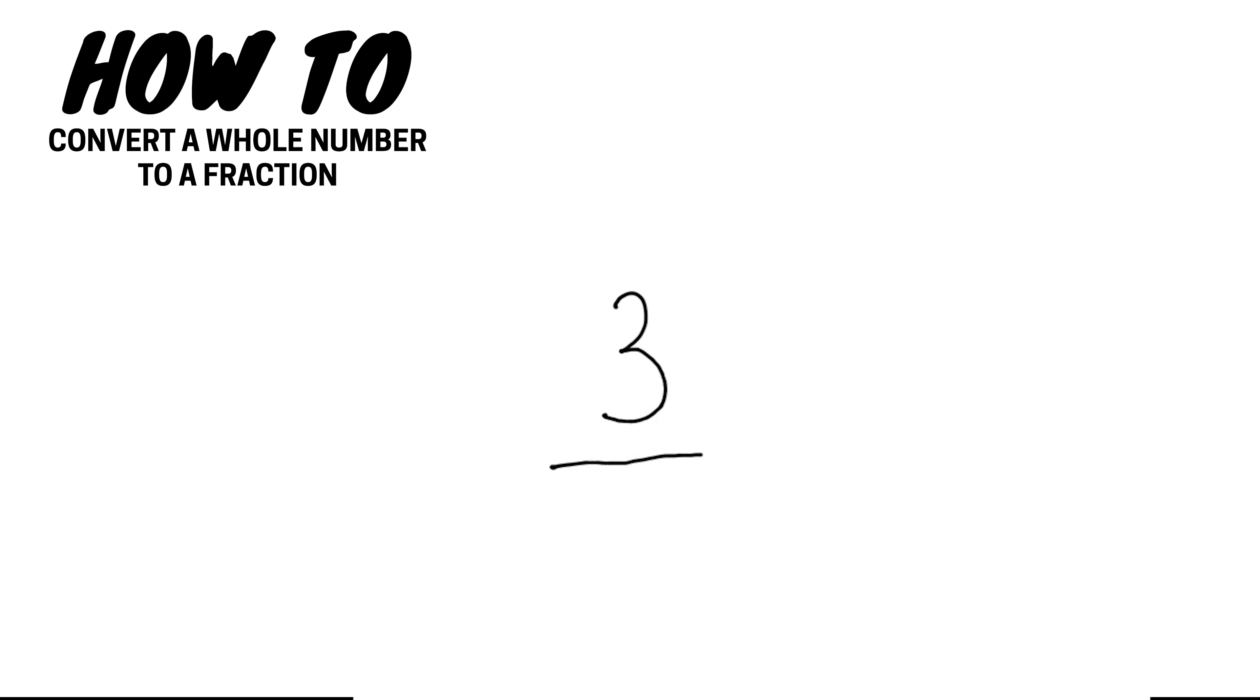When we write a whole number with a denominator of one it tells us that the fraction type is wholes. So in this case we have three wholes. So we have not changed the value of the number, we are just simply writing it in a different way.